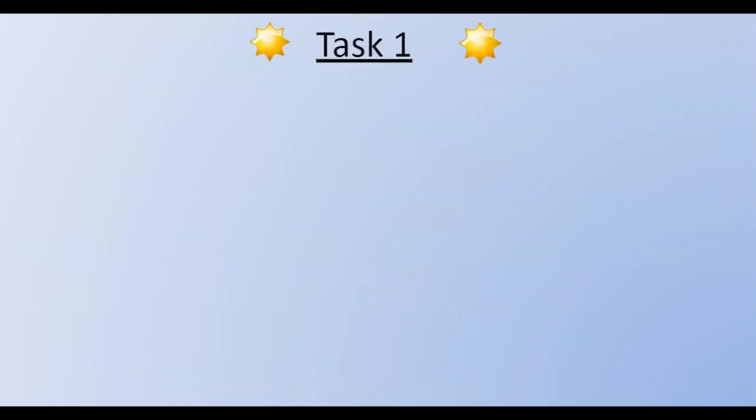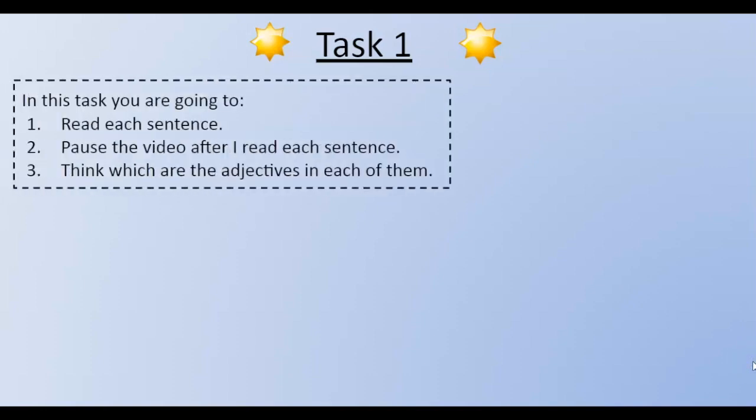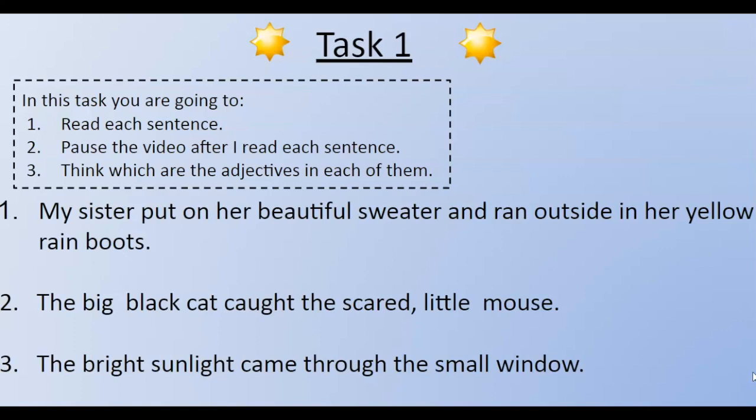Now that we talked about adjectives, I want you to do the following task. You are going to read each sentence, pause the video after I read each sentence, and think which are the adjectives in each of them. My sister put on her beautiful sweater and ran outside in her yellow rain boots. The big black cat caught the scared little mouse. The bright sunlight came through the small window. Now you are going to pause the video and think which are the adjectives in each sentence.